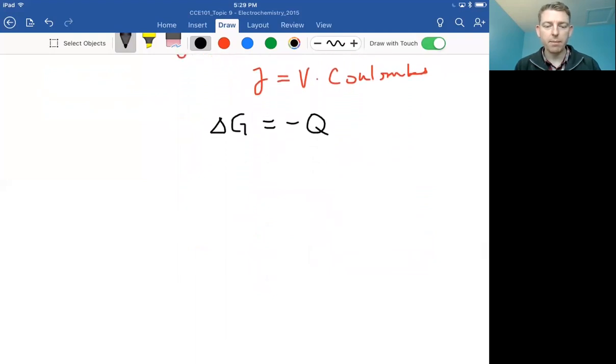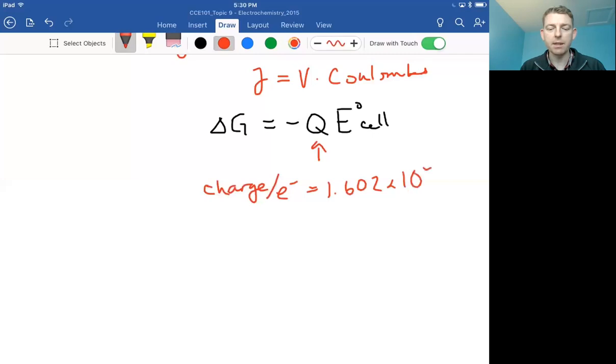Okay, so charge—maybe you'll be lucky enough and we'll have something give us the charge in the question. Other times you won't be so lucky, and we also want to connect that back to something that we can track in these reactions. So how exactly do we get this charge? We can look at the charge per something that we know is a charged particle that's already participating in all of these redox reactions. So charge per electron, and this is measured at 1.602 times 10 to the negative 19 coulombs.